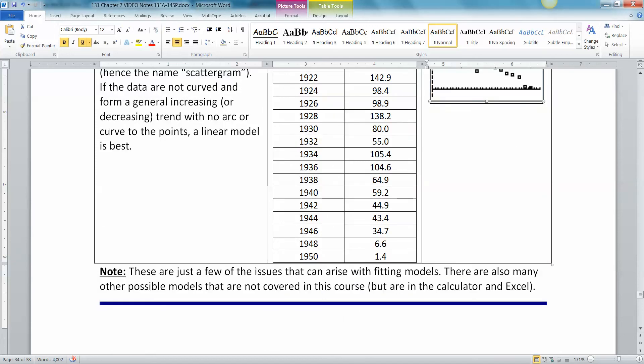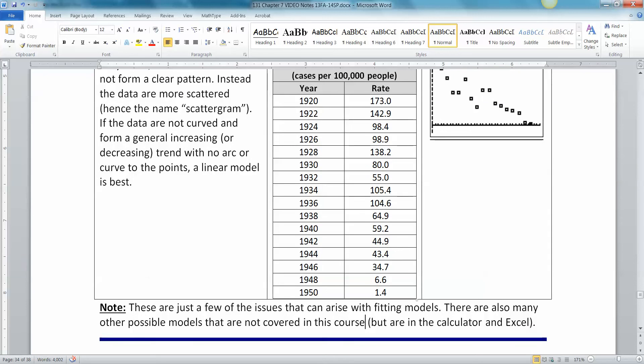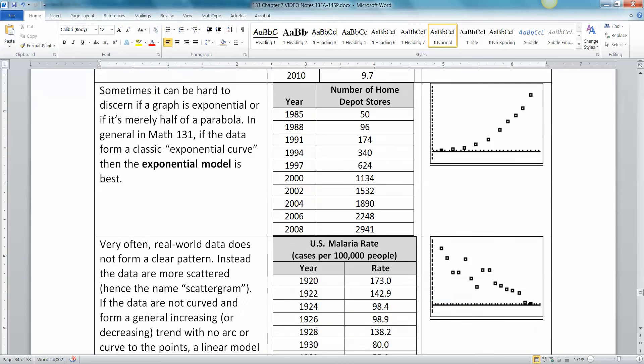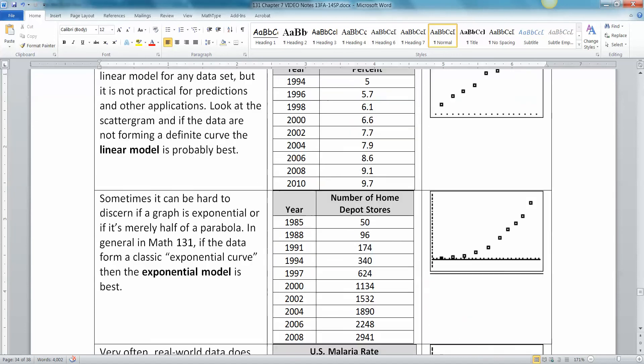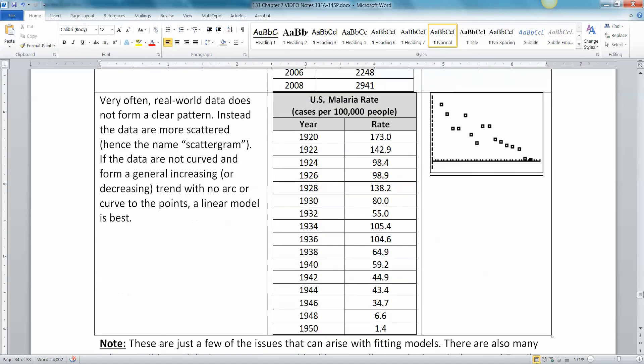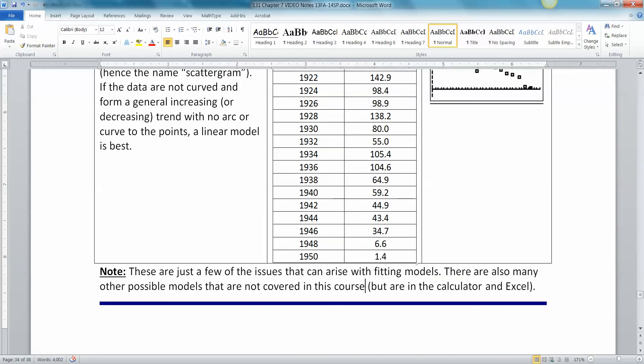And just as a side note, these are just a few of the problems that you can run into. There's a lot of problems that you can run into with all of the modeling, and which model is best, and which R squared value is best, and all of that stuff. But we are going to stick with the basics for this course. If it looks linear-ish, then go with linear. If it looks like exponential, then go with exponential. Be wary of quadratics because they'll have high R squared values, but they're not always good fits for your data. All right, I'll see you back here for section 7-8.